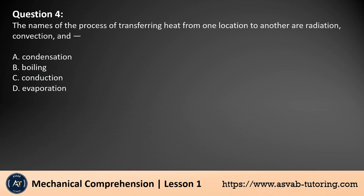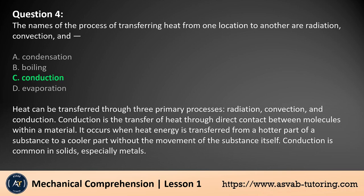Question 4. The names of the process of transferring heat from one location to another are radiation, convection, and: A. Condensation, B. Boiling, C. Conduction, D. Evaporation. The answer is C. Heat can be transferred through three primary processes: radiation, convection, and conduction. Conduction is the transfer of heat through direct contact between molecules within a material. It occurs when heat energy is transferred from a hotter part of a substance to a cooler part without the movement of the substance itself. Conduction is common in solids, especially metals.